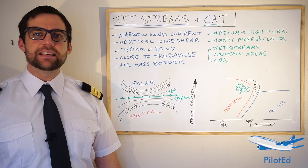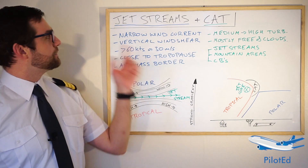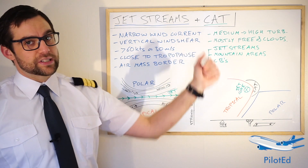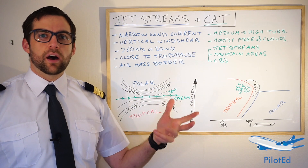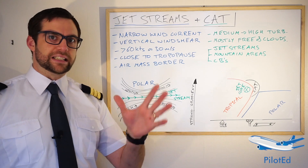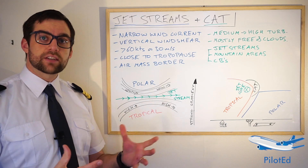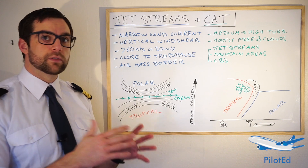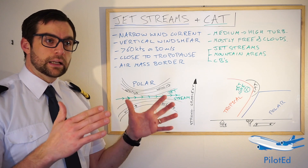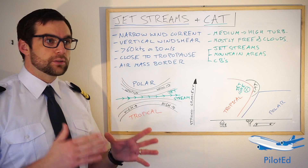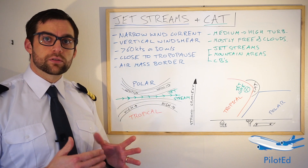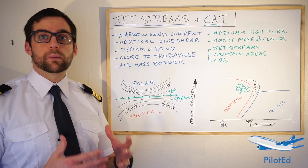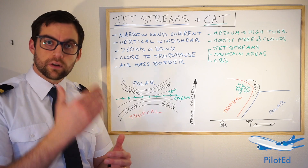Welcome to ATPL theory. Today we're going to be talking about jet streams and clear air turbulence, also known as CAT, or sometimes known as high level turbulence, HLT. A jet stream is essentially a very narrow, very fast moving current of air located between two air masses. Speeds over 60 knots or 30 meters per second designate it as a jet stream, with a high probability of wind shear — specifically vertical wind shear.